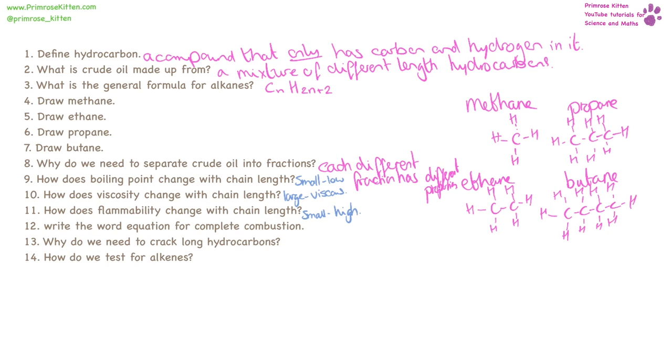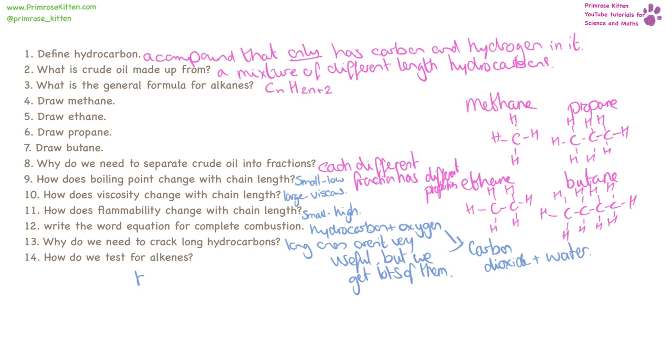The word equation for combustion, we have hydrocarbon plus oxygen leads to carbon dioxide plus water. Why do we need to crack long hydrocarbons? Because the long ones aren't very useful, but we have lots of them, whereas the short ones are very useful and we don't have very many of them. How do we test for alkenes? That is the bromine water test.